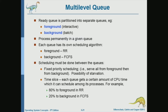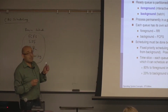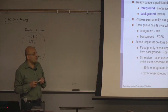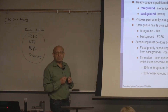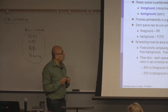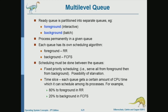With two levels, the operating system can use a different scheduling algorithm in each level. For example, in the foreground or interactive level it may use round robin, while in the background level it may use first come first serve. Why does this choice make sense?